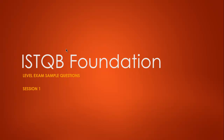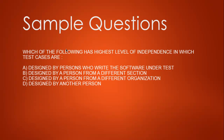Let's start with session one. Here is our first question: which of the following has the highest level of independence in which test cases are designed? Option A: designed by persons who write the software under test. Option B: designed by a person from a different section. Option C: designed by a person from a different organization. Option D: designed by another person.